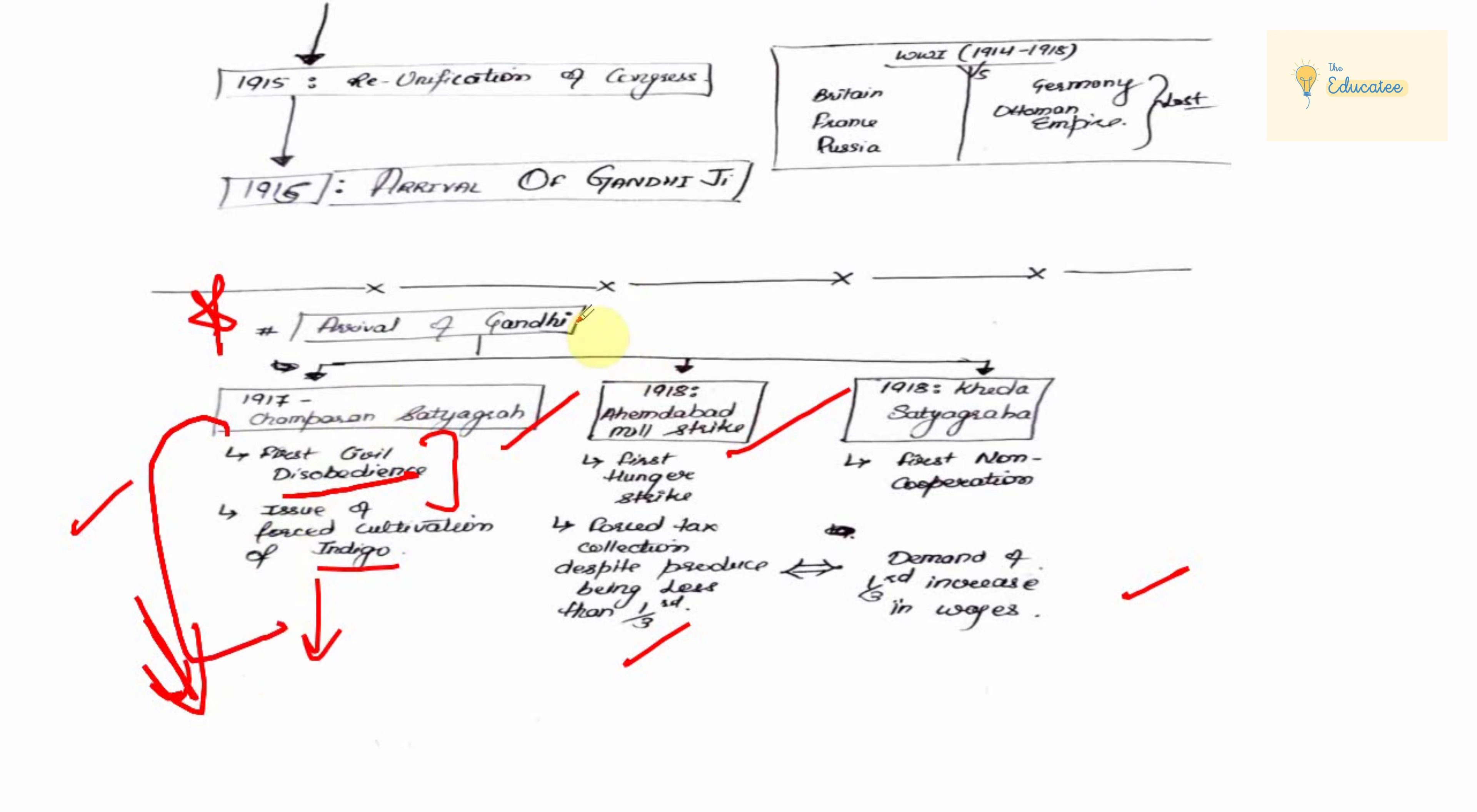This civil disobedience is going to be converted to a big level. At 1918, Ahmedabad mill strike. At this time, the mill strike was said that the tax collected a lot. And when the production was reduced, the tax collected a lot. So they had the first hunger strike.